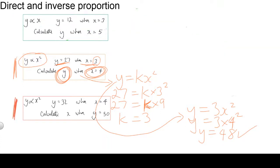Let's deal with the last question now. Once again, y is directly proportional to x squared. So we write y is equal to k x squared. We need to find the value of k using the information that's given to us.